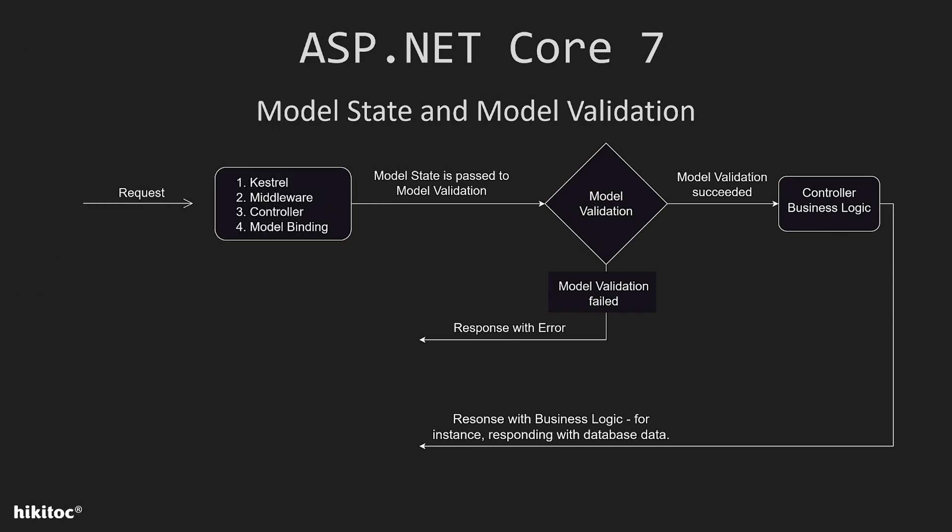When the request is received by ASP.NET Core, it moves through the middleware pipeline. This pipeline processes the request and forwards it to the appropriate controller action. After the controller action, two subsystems are triggered: the first, as discussed in previous lessons, is model binding, and the second is model validation.